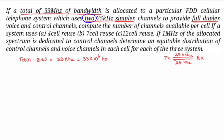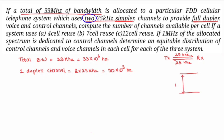So one duplex channel equals 2 × 25 kHz = 50 kHz, which is 50 × 10³ Hz. We have a total bandwidth of 33 MHz = 33 × 10⁶ Hz. To find the total number of duplex channels, we divide total bandwidth by bandwidth per duplex channel: 33 × 10⁶ divided by 50 × 10³.